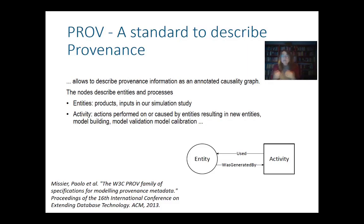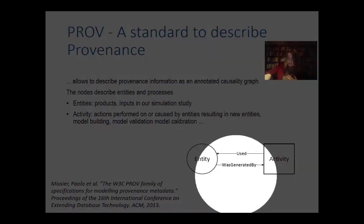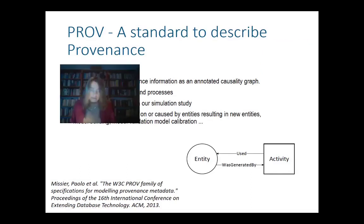Typically, what connects the relations between entities and activities is that an activity uses an entity. It may use it in different roles — for example in our simulation context, you may use data for calibration, you may use data for validation — and we have entities that are generated by these activities, for example that you have now achieved a validated simulation model.